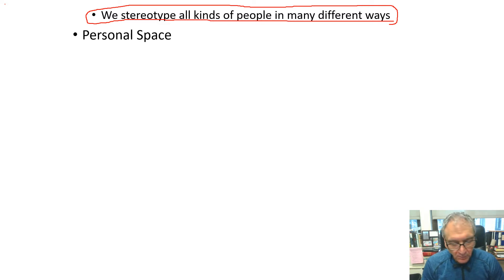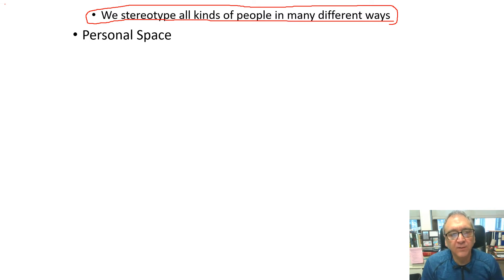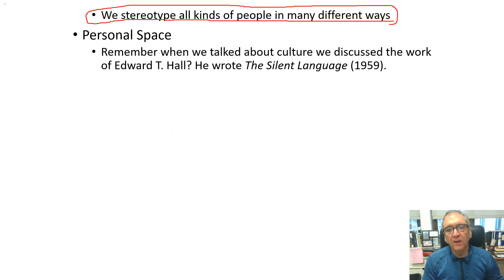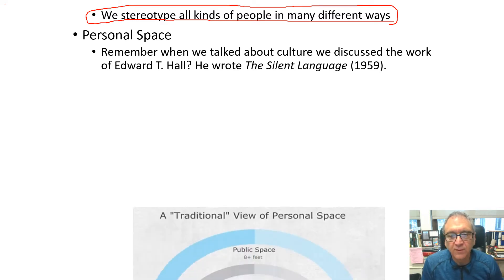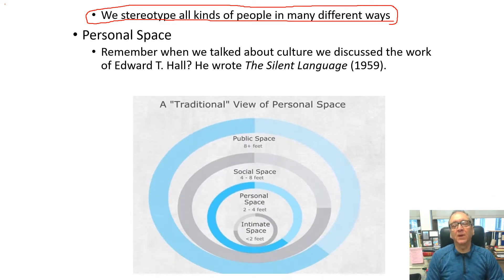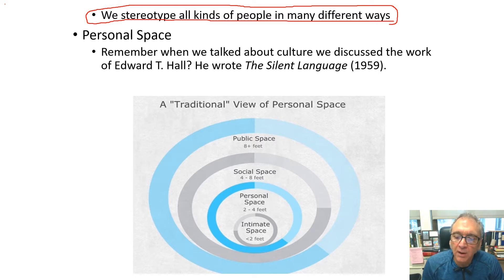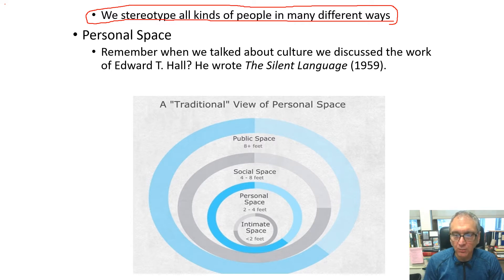One of those things was personal space. I want you to remember Edward T. Hall — he wrote a book called 'The Silent Language.' He gives us a chart depicting acceptable distances for personal space in North America. I'm not going to rehash that again, just want you to recall it and bring it back to mind.